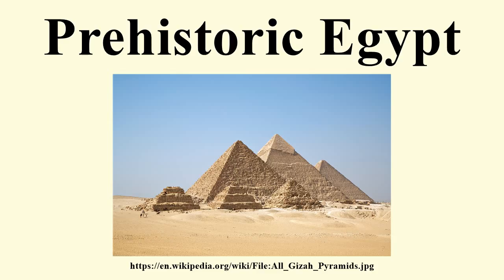The first Egyptian life-size head made of clay comes from Merimda. The El-Omari culture is known from a small settlement near modern Cairo. People seem to have lived in huts, but only post holes and pits survive. The pottery is undecorated. Stone tools include small flakes, axes, and sickles. Metal was not yet known. Their sites were occupied from 4000 BC to the Archaic period. The Maadi culture is the most important Lower Egyptian prehistoric culture contemporary with Naqada I and II phases in Upper Egypt.